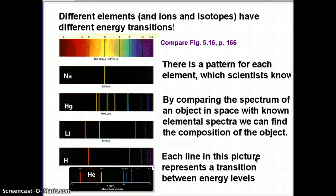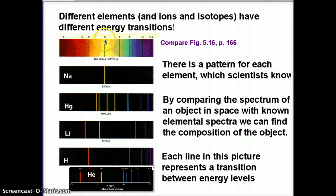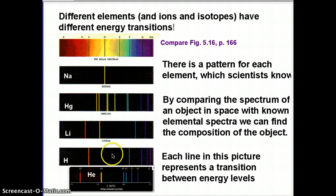Scientists know the patterns for the different elements, and you just look at the spectrum of your object in space, like the Sun, and compare it against these things. For instance, this line here at D matches up perfectly with this line in sodium. That would tell me that there is sodium in the Sun, because this line can only come from sodium — you don't see that for anything else. Mercury has something that's close, but not exactly.